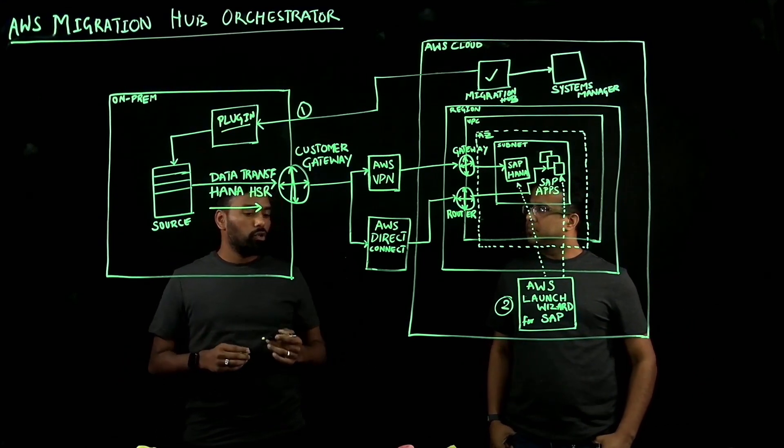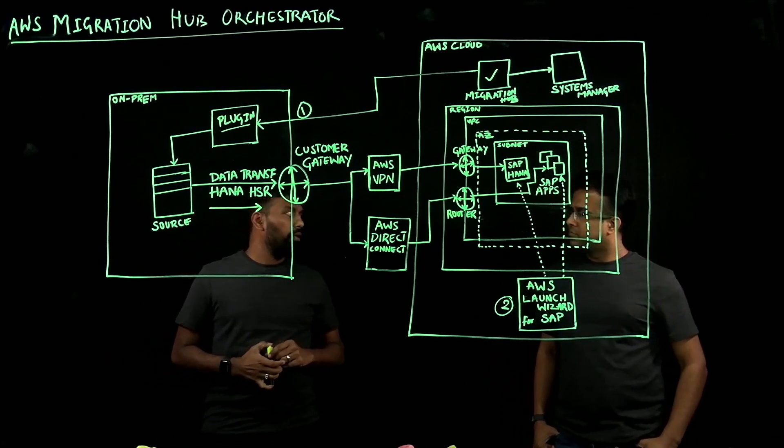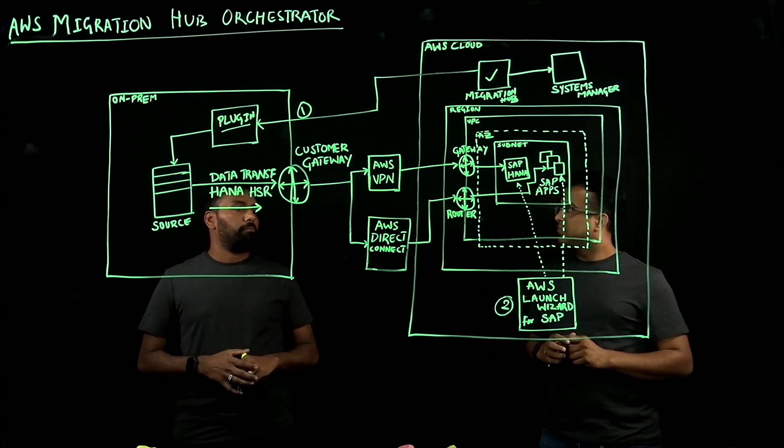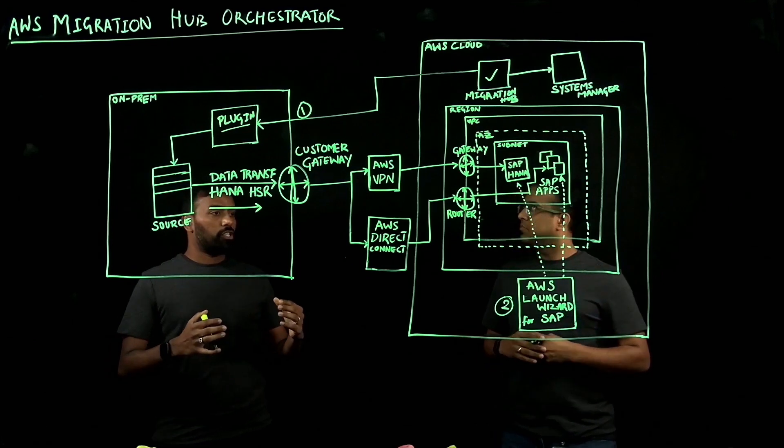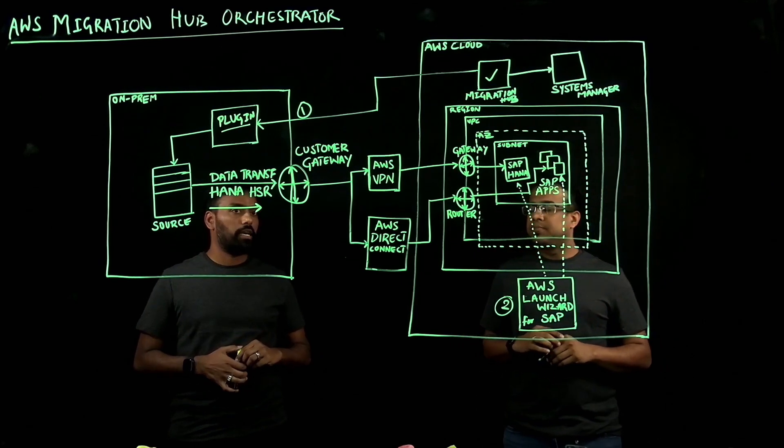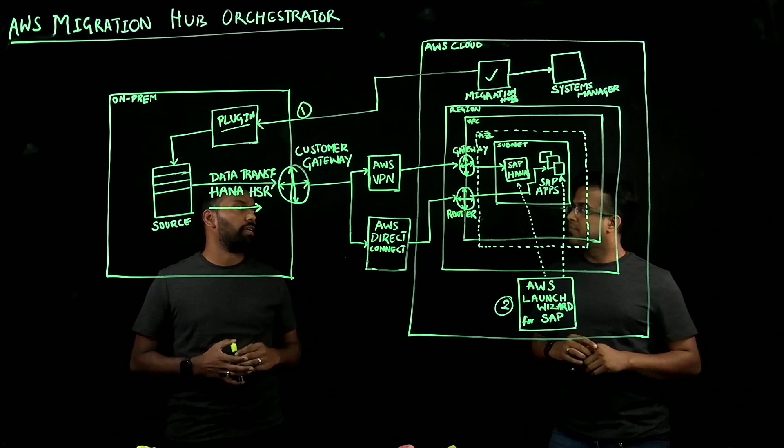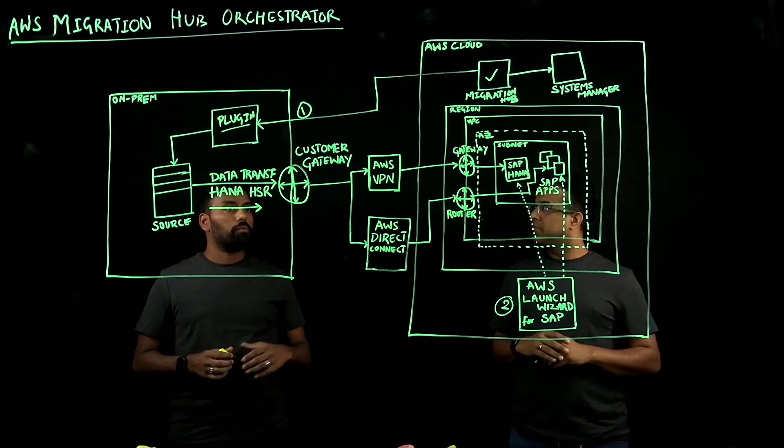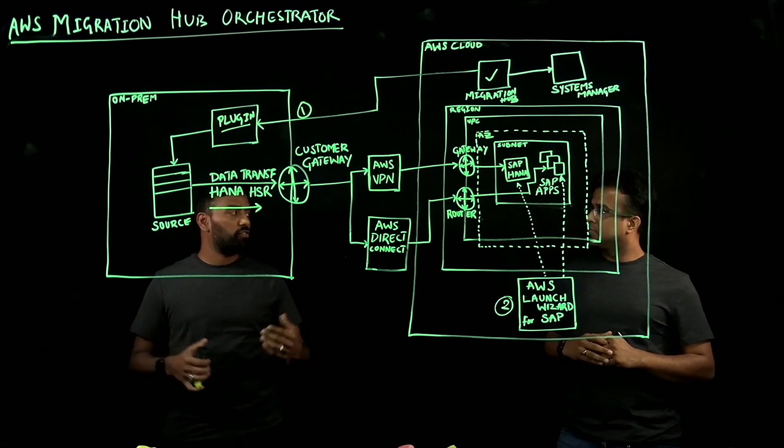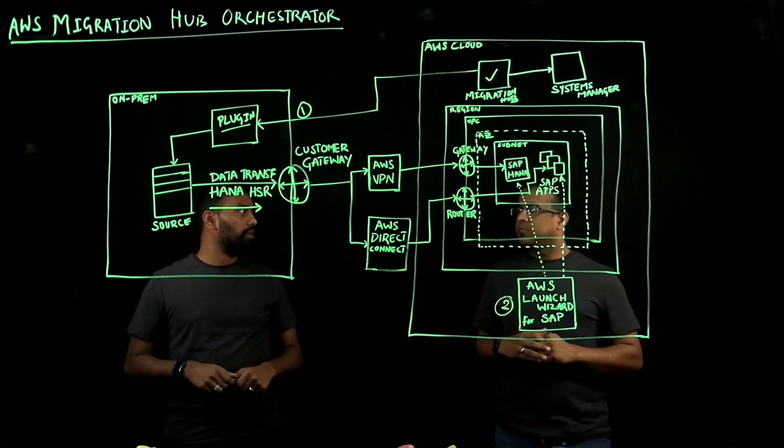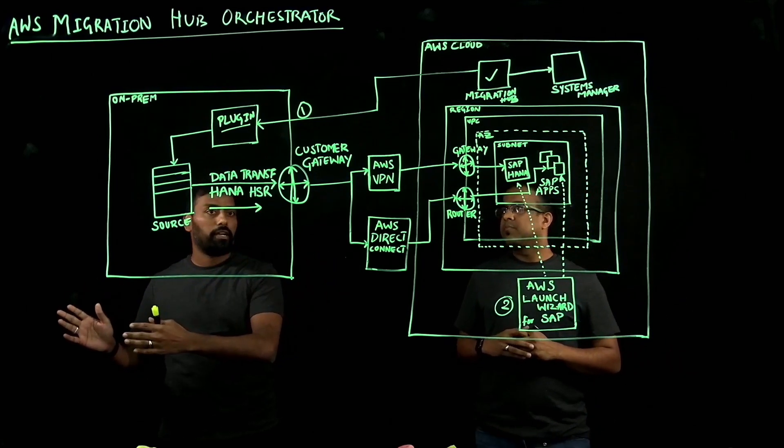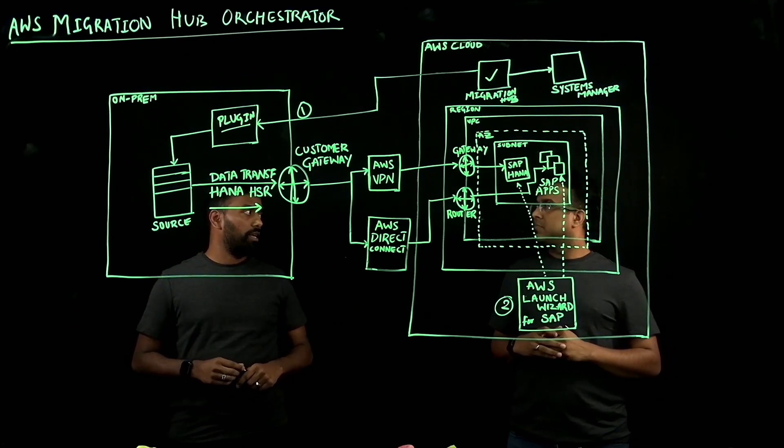And then, it also gives you an option to customize your workflow by adding additional customer-specific requirements. For example, a customer has a requirement to add their servers to a DNS. They can actually add a custom step with a script included into that custom step that can execute these customer-specific activities. And finally, it lets you do some post-migration activities as well, such as copying your file systems over, like your interface file systems or your global file systems. That way, your Migration Hub Orchestrator is helping you orchestrate activities end-to-end, right from the discovery all the way till your post-migration activities and cut-over.